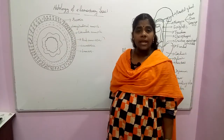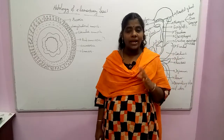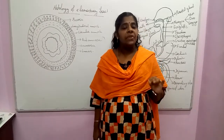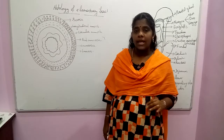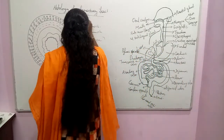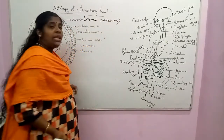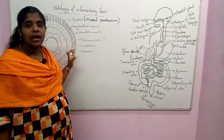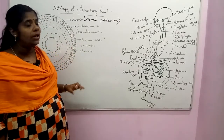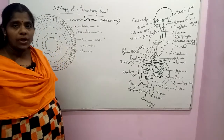The outermost layer is the serosa layer, which functions for the protection of this alimentary tract. The serosa layer is made with visceral peritoneum — epithelial cells that cover the visceral organ. This serosa also has some connective tissue in it.